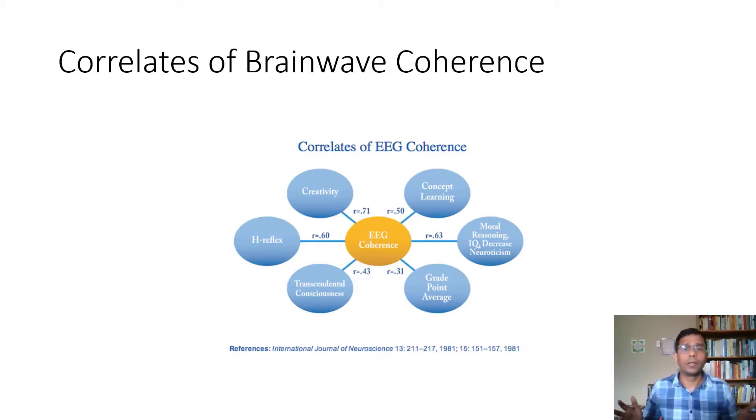Why does this brain wave coherence matter? Because it is associated with a lot of good things in life: higher creativity, higher grade point average, higher IQ, low neuroticism, more abstract learning and so on. That is why we want to achieve more brain wave coherence. That is the reason we want to achieve more of those alpha wave patterns, or if we can, those gamma wave patterns, or being able to spend more time in those gamma wave stages. These are things that we accomplish through meditation.